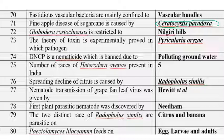Globodera rostochiensis is restricted to Nilgiris hills, where it is a very severe problem especially during potato production. It is also known as the golden cyst nematode.